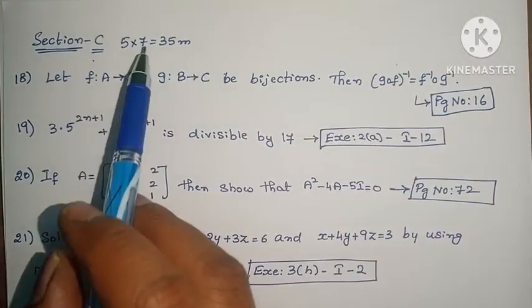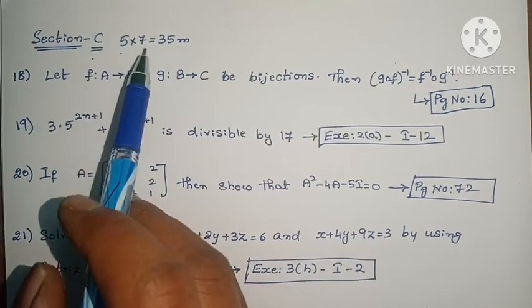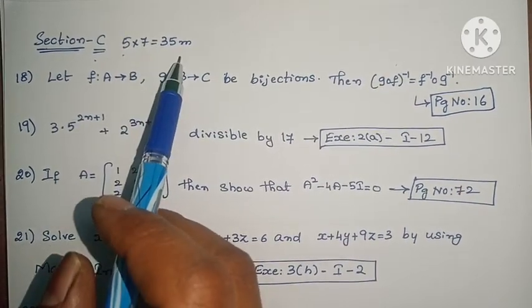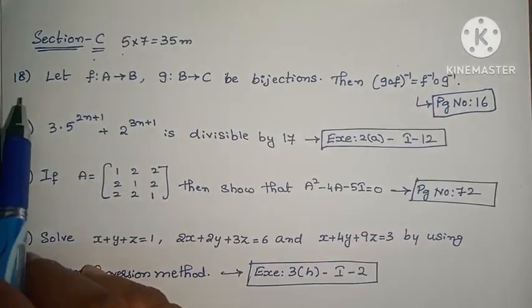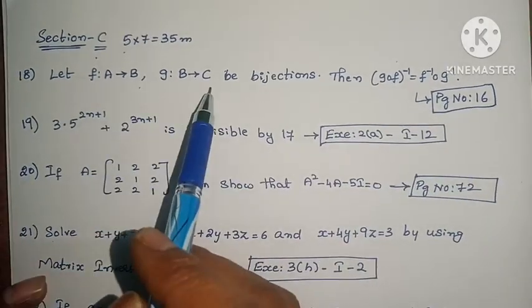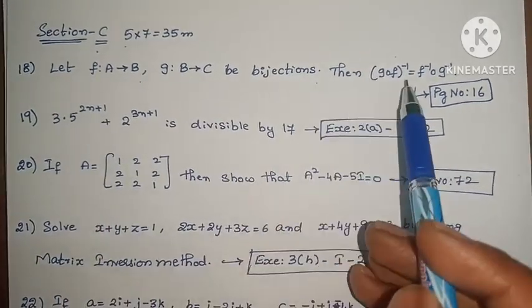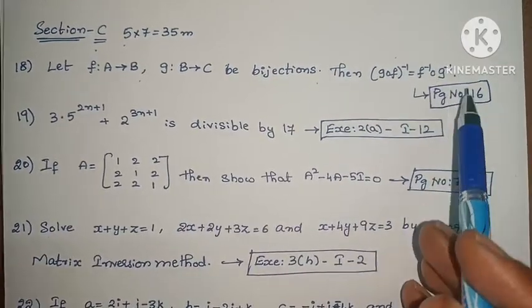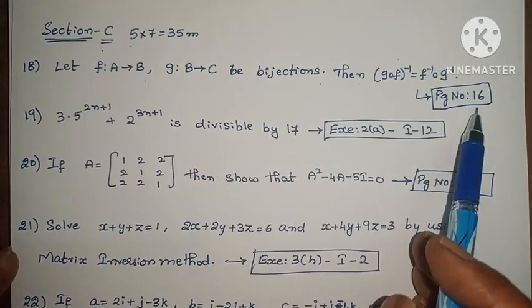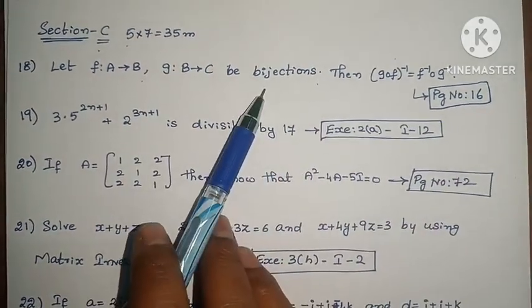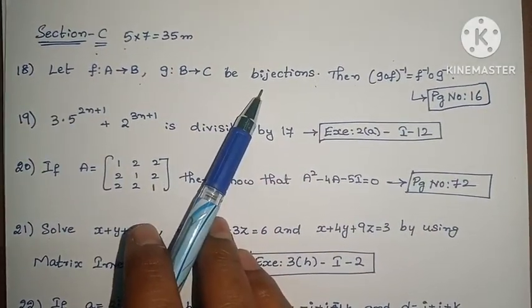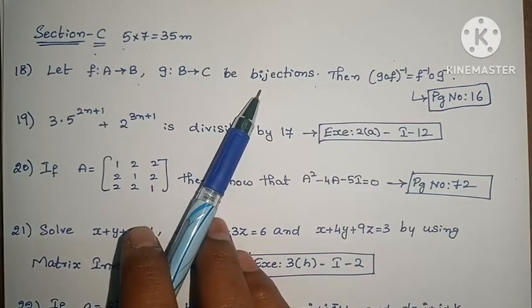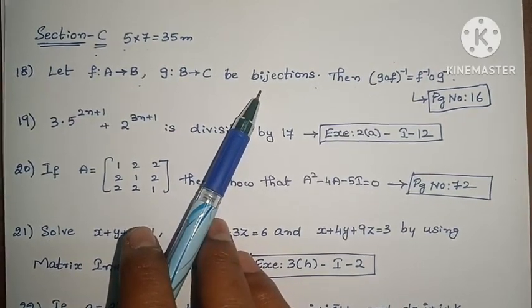Section C: Here we have 7 problems, you have to answer 5 problems, each worth 7 marks, so total is 35 marks. Question 18: Let f map A to B, g map B to C be bijections, then prove that g circle f whole inverse equals f inverse circle g inverse. This theorem is on page 16 in the textbook. Theorems are very important. In many question papers, they give 7 marks, so practice the theorems well.